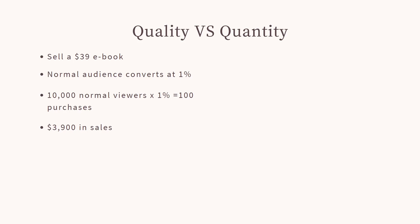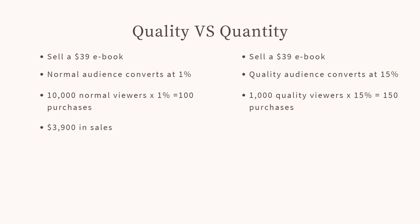You're going to make $3,900 in sales. And while that does sound amazing, let's now have a look at quality. So let's say you're again selling a $39 e-book, but your quality audience converts at 15%. So let's say you have 1,000 quality viewers which convert at 15% and they make 150 purchases. You are going to make $5,850 in sales.